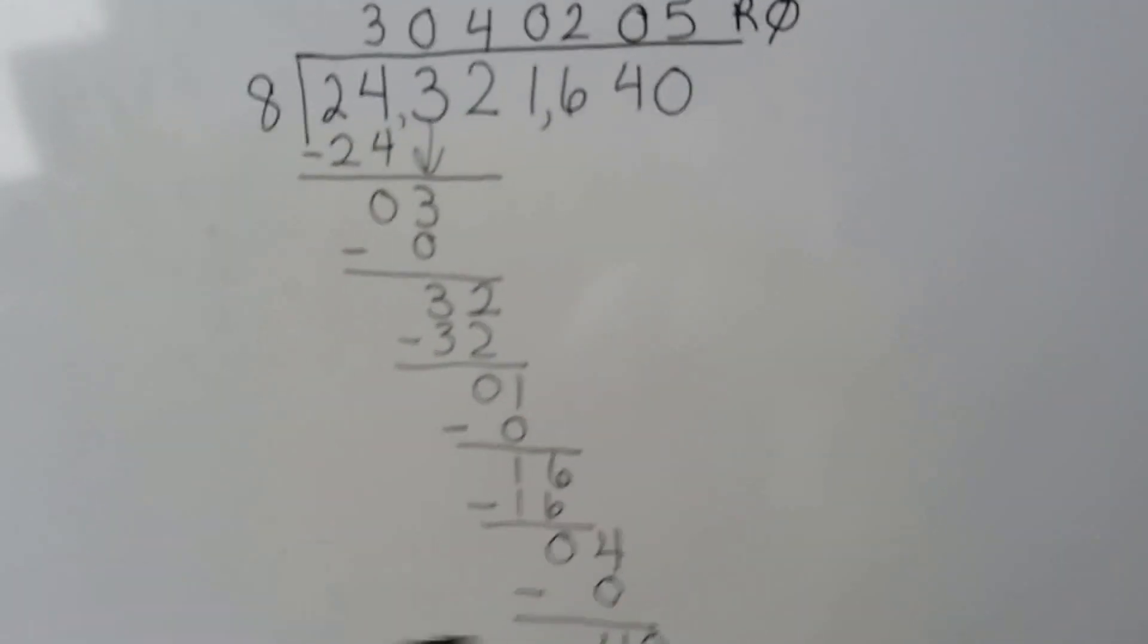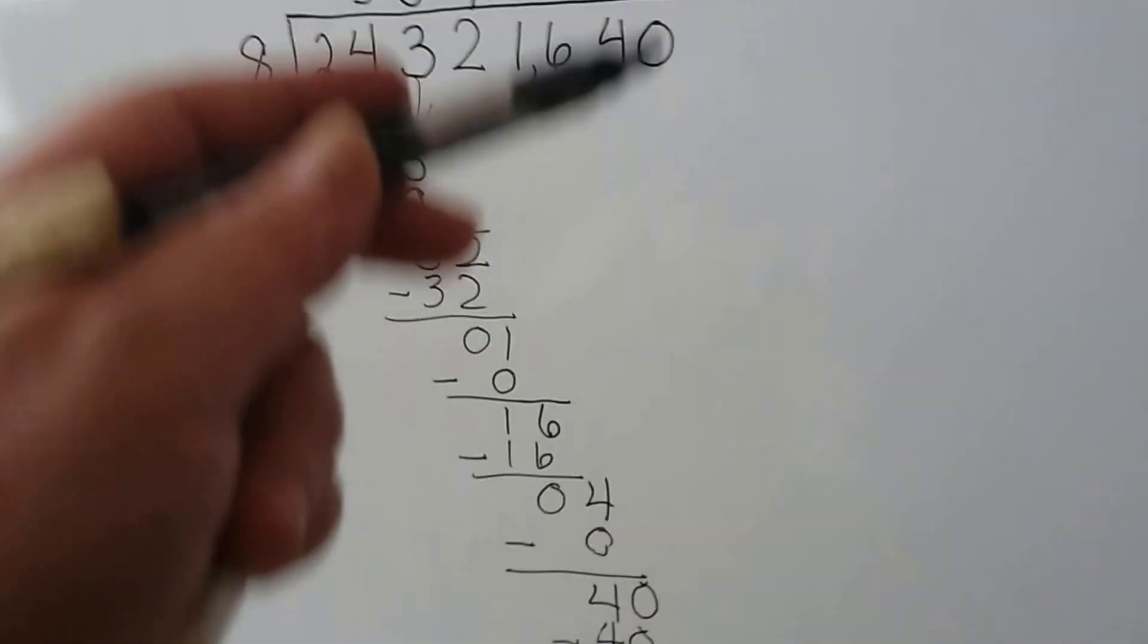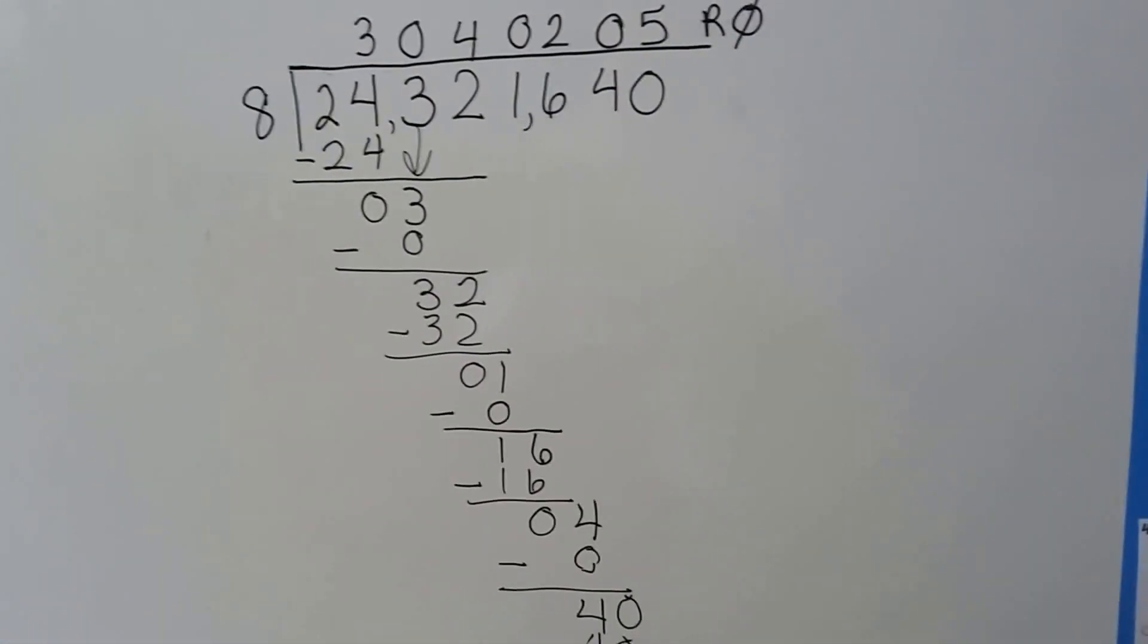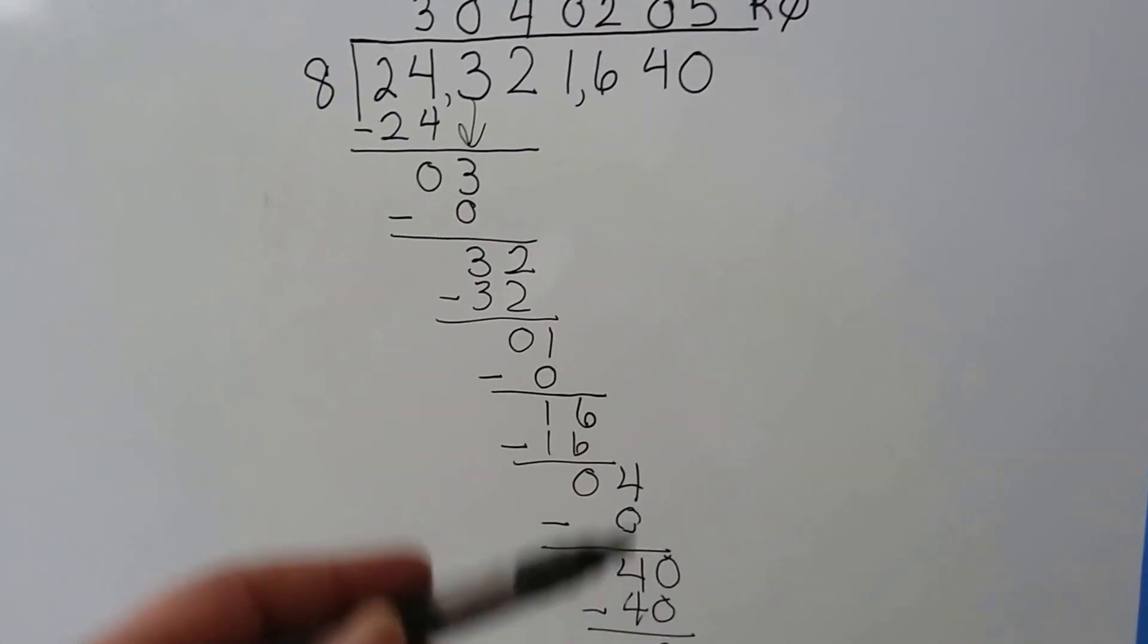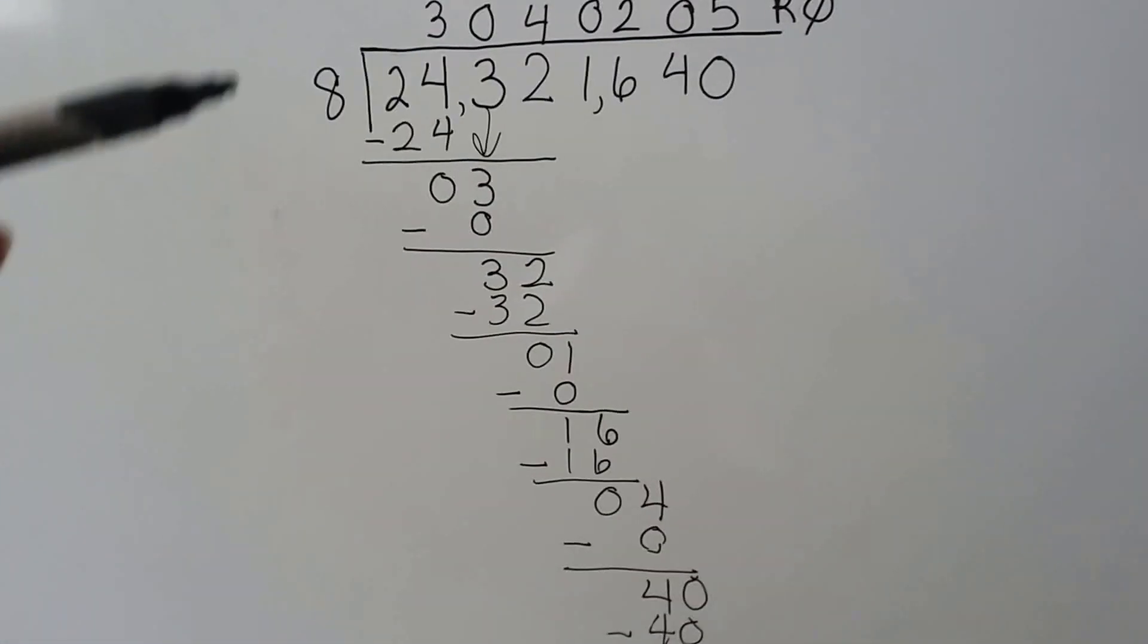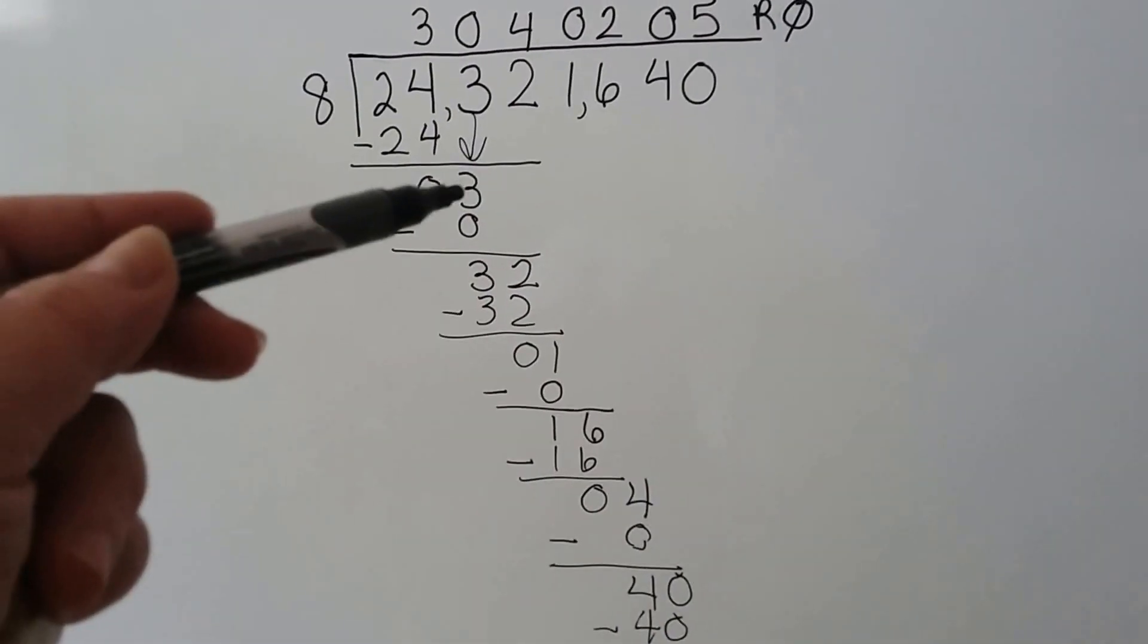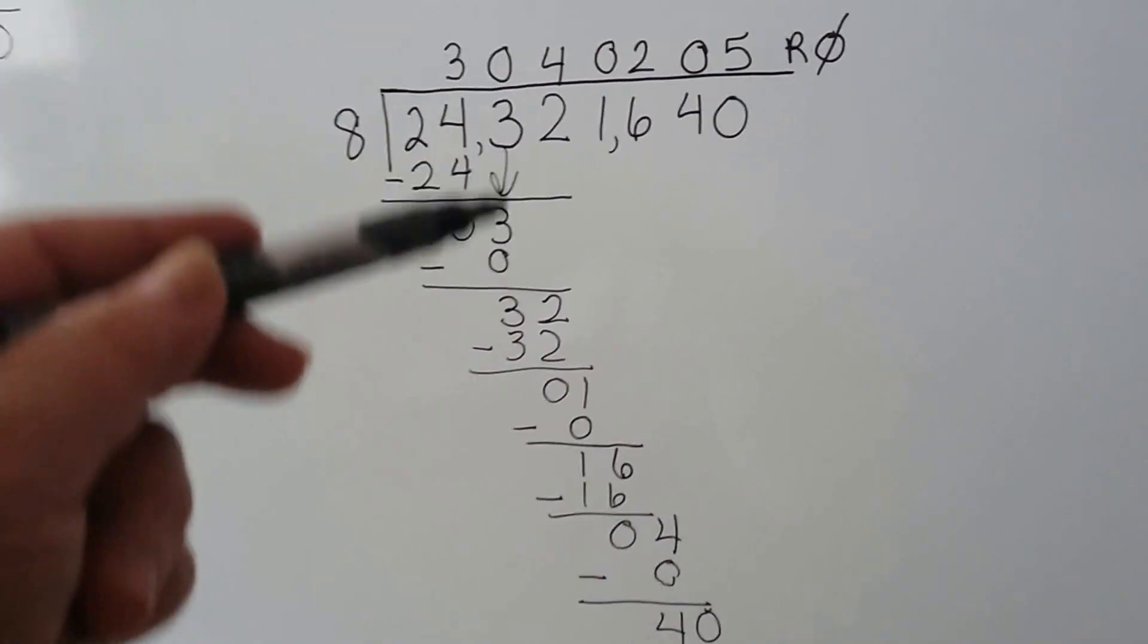So we do the eight times zero. We get a zero again. Now we drop down the zero, and we get a forty. Eight fits into forty five times. So whenever you get to that point where it can't fit in, that's where the zero comes in.